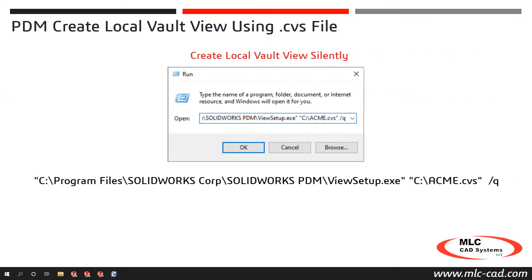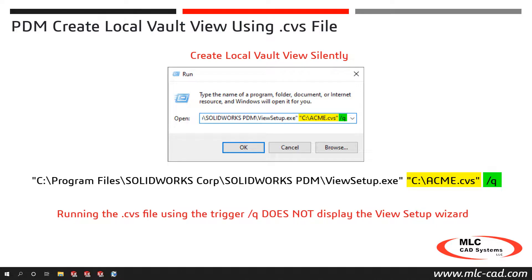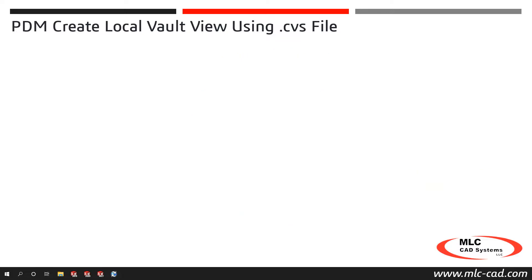The view setup wizard and CVS file can be run silently on the client machine by including the path to the CVS file followed by the trigger /Q, as shown in the text example. Don't forget to include the quotation marks. Creating local vault views using this method does not display the view setup wizard and there is no confirmation screen. Once the local vault view is created successfully, the user will be prompted to log in using their PDM credentials, and the local vault view is ready to use.